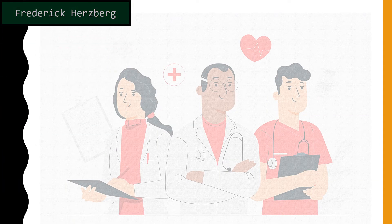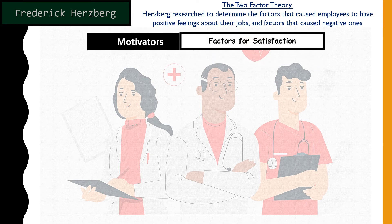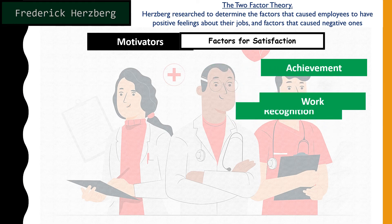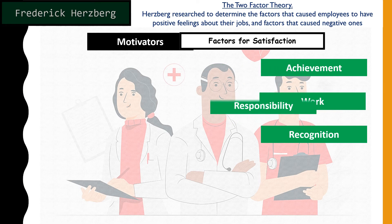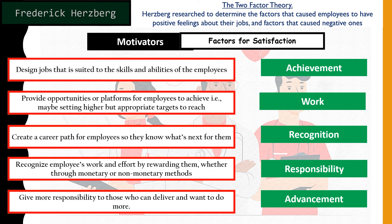Now we move on to the motivators — the factors of satisfaction. These are: achievement, work design, recognition, responsibility, and advancement. Again, we have descriptions for all five factors of satisfaction in a jumbled-up manner for you to sort out. Take a moment to match them before we discuss the answers.